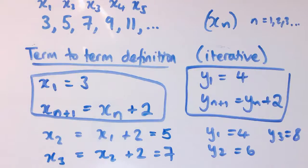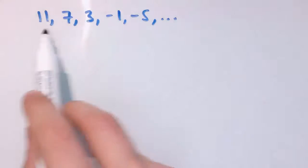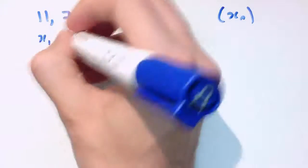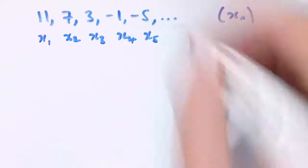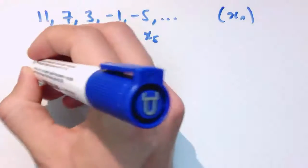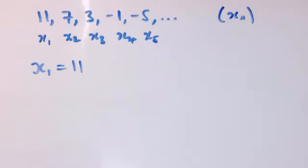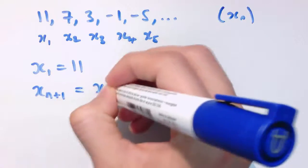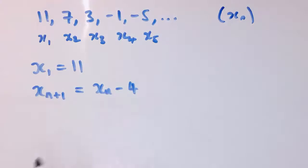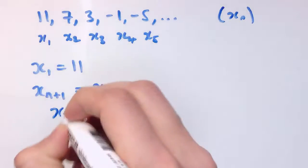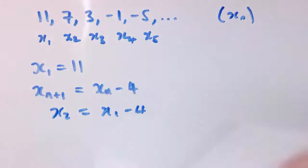Some sequences are easier to define one way, some the other way. Let's look at another sequence: 11, 7, 3, minus 1, minus 5. Call it xn again: x1, x2, x3, x4, x5. This sequence is going down in fours and starts at 11. The term-to-term definition is fairly straightforward: x1 equals 11, and xn plus 1 equals xn minus 4. If n equals 1, I get x2 is x1 minus 4. Since x1 is 11, that's 7, and it keeps subtracting 4.